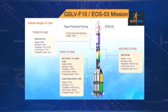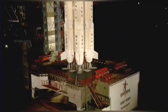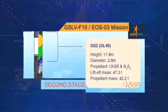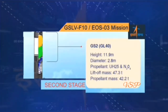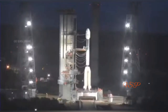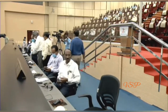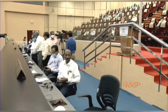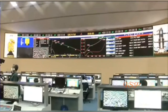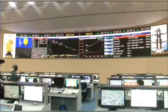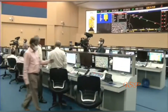The GL40HT of height 11.9 meters, diameter 2.8 meters, the stage also 2.2 tons. Anomaly observed in the cryogenic stage — mission could not be accomplished fully.